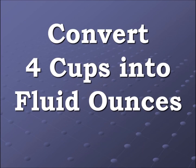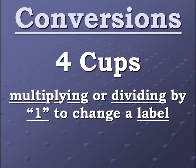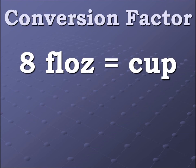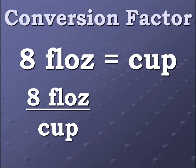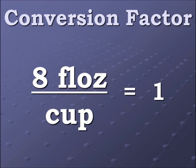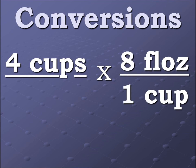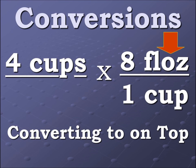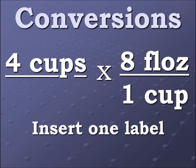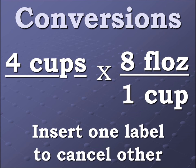We're going to convert four cups into fluid ounces. We begin with four cups, and what we're going to do is multiply or divide by one in order to change a label. So here's our conversion factor again — we turn that into a ratio which is equal to one. We multiply our conversion factor by four cups, making sure what we're converting to, fluid ounces, is on top, because we're trying to insert one label to cancel out another label.